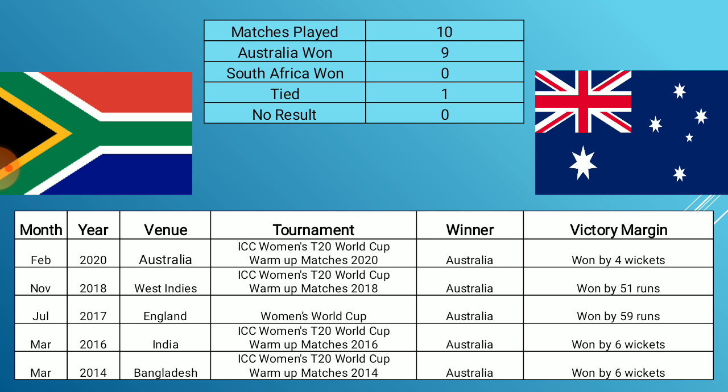Let's start with the head-to-head record between these teams across all formats. The record is something South Africa would not like to see before they walk on to the SCG — they have never defeated Australia in World Cup matches or in a bilateral series. Australia enjoy a 4-0 record against South Africa in T20 World Cup encounters. Overall, 10 matches have been played and Australia have won 9 of them with one tied match. Even in the practice match of this very tournament, Australia won by 4 wickets.